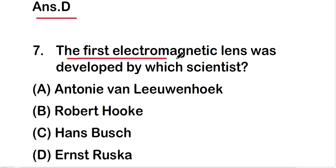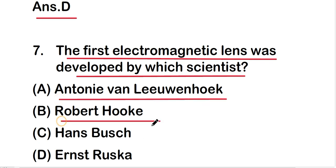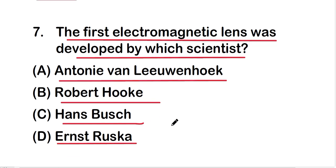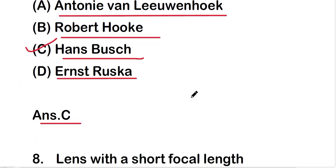The first electromagnetic lens was developed by which scientist? The options are Anton van Leeuwenhoek, Robert Hooke, Hans Busch, or Ernst Ruska. The right answer is option C — Hans Busch.